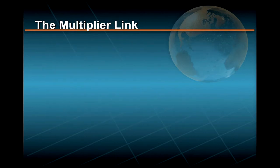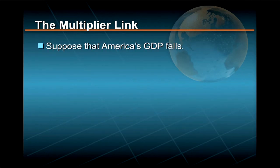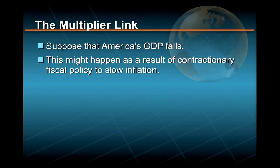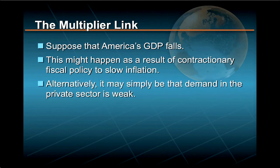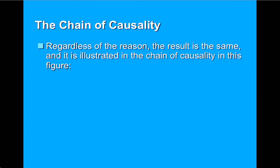Perhaps the best way to understand this important point is to illustrate the mechanisms through which domestic fiscal and monetary policies actually affect the global economy. Let's look at fiscal policy first. Suppose that America's GDP falls — this might happen as a result of contractionary fiscal policy to slow inflation, or it may simply be that demand in the private sector is weak. Regardless of the reason, the result is the same, as illustrated in the chain of causality in this figure. Lower income in America, YA, leads to lower exports from Europe, IMA.